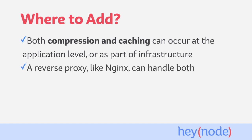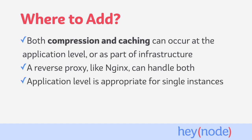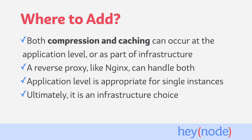If you're running multiple instances of your application, you may already be using a reverse proxy like Nginx to load balance between different instances, at which point you can let your reverse proxy handle compression and caching for you. If you're not running a reverse proxy or are running a single instance of your application, implementing caching and compression at the application level is appropriate. Deciding where to implement caching and compression is an infrastructure choice that depends on factors outside the scope of this tutorial. Regardless of where you choose to use them, caching and compression are useful tools that can help improve the performance of most applications.